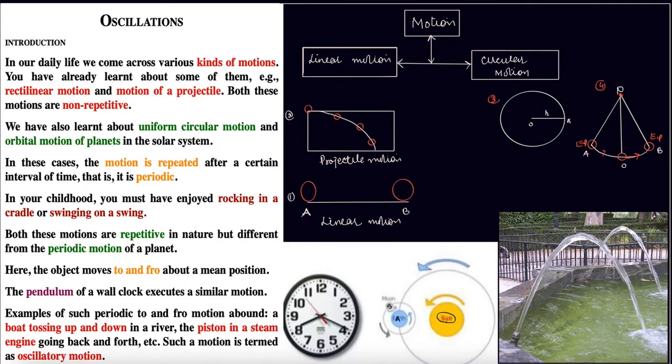This chapter is on oscillations. We'll start with introduction. In our daily life we come across various kinds of motion. We have learned about some of them - rectilinear motion, which is motion in a straight line, and projectile motion. Both of these motions are non-repetitive.